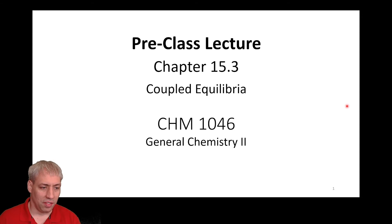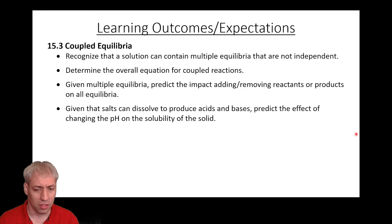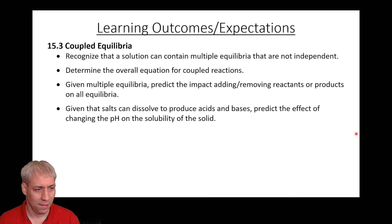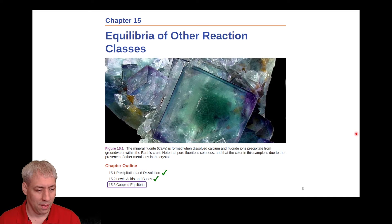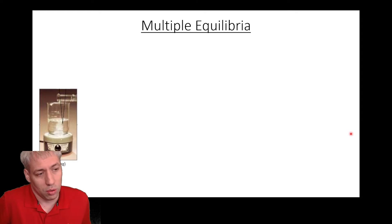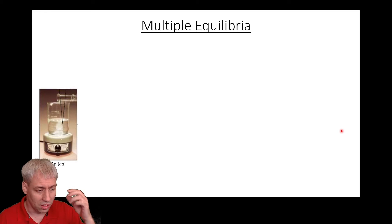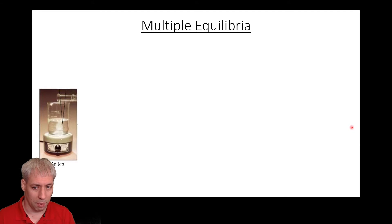We're going to close out Chapter 15 with Coupled Equilibria, Section 15.3. There are Learning Outcomes Expectations — feel free to pause and read through those. So, Coupled Equilibria. We've talked a bunch about equilibrium in Chapters 13, 14, and 15. Section 15.3 basically ties that together in that you can have more than one equilibrium happening at a time.